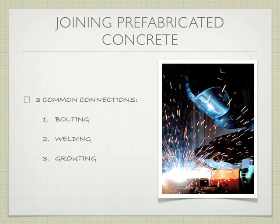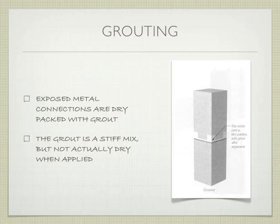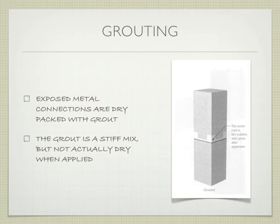The next logical question is: how do I tie these elements together and make them a uniform piece? There are three common connections: bolting, welding, and grouting — primarily for column-to-column and column-to-beam connections. We already talked about the topping compound joining slabs together. Grouting means that exposed metal connections are dry-packed with grout — not that the grout is dry, just that it has very little water so it's very stiff. The idea is we have a metal connection and we're covering it with this grout, packing it in around that metal connection.